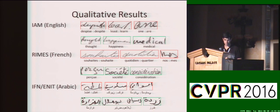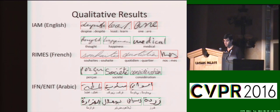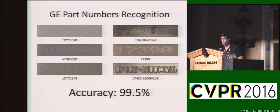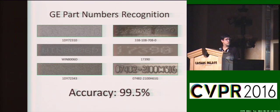Here are some samples from all the handwriting recognition benchmarks we've used. Odd rows show typical mistakes, while even rows show successful predictions. We also use a variant of this system for doing part number recognition. In part number recognition, the inputs are images of metallic objects with engraved serial numbers — some of them are extremely hard to read. Using our method, we got near-perfect results on this task.